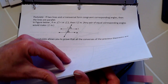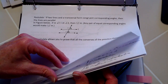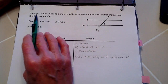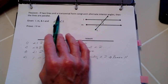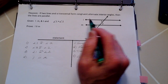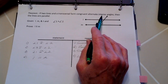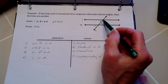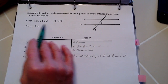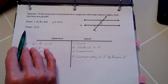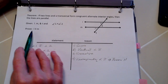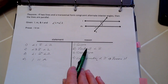Our first theorem: if two lines and a transversal form congruent alternate interior angles — angles one and two — then the lines are parallel. We're going to prove that lines L and M are parallel.